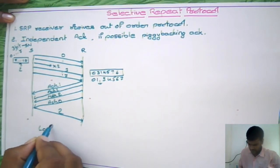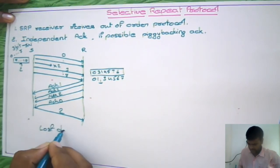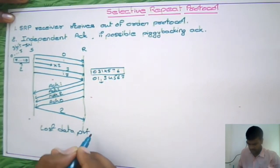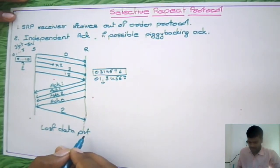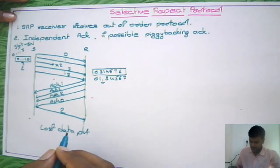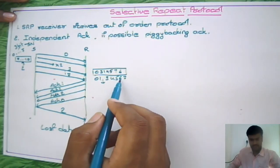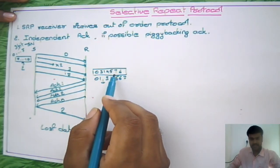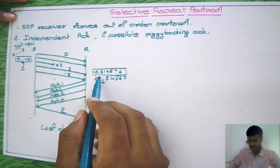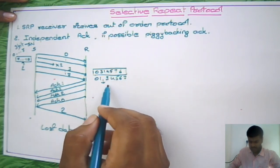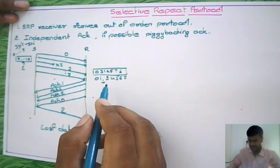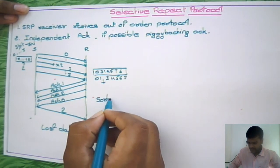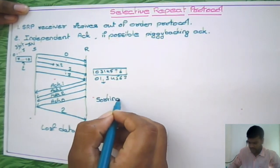If you observe, whenever packets are received, they arrive out of order, so the receiver needs to sort all the packets. Therefore, on the receiver side, a sorting technique is required.